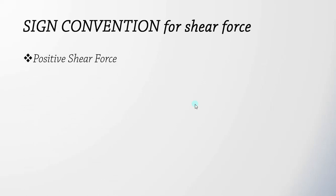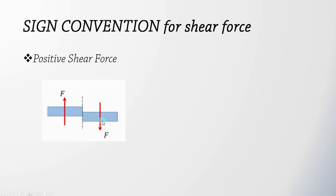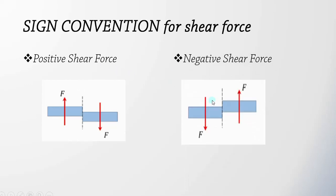For the sign convention for shear force: if a section is made and the shear force is moving upwards on the left-hand side and downwards on the right-hand side, tending to twist the member in a clockwise direction, we call it a positive shear force. If the shear force is moving downwards on the left and upwards on the right, that is a negative shear force, and the two shear forces will tend to twist the member in an anticlockwise direction.